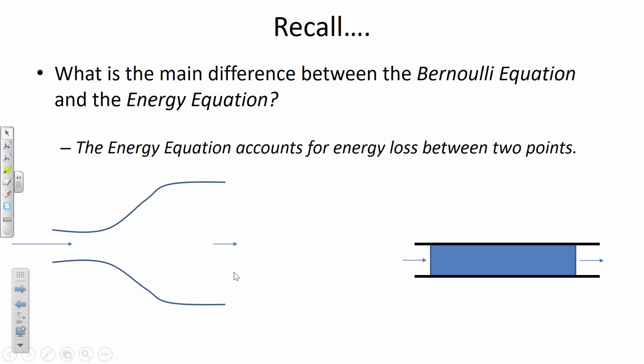We had some limitations on how broadly we could apply Bernoulli's equation. The restriction said that Bernoulli's equation was valid for steady flow, for an incompressible, inviscid fluid along a streamline. Those limitations about it being an inviscid fluid meant that Bernoulli's equation has no way to account for pipe friction and energy loss due to shear stress of the pipe resisting the movement of the water.